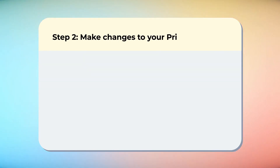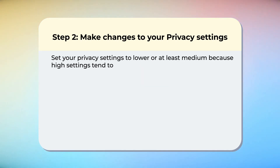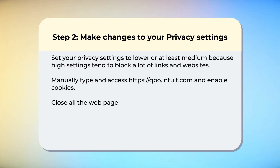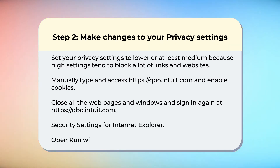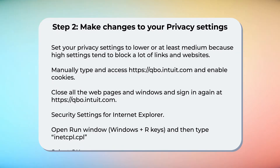Step 2: Make changes to your privacy settings. Set your privacy settings to lower, or at least medium, because high settings tend to block a lot of links and websites. Manually type and access https://qbo.intuit.com and enable cookies. Close all the web pages and windows and sign in again at https://qbo.intuit.com.